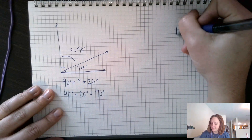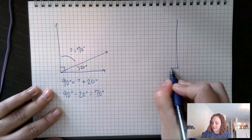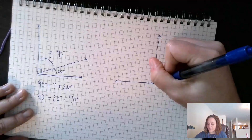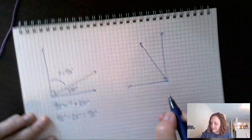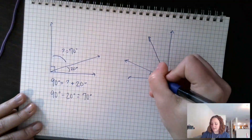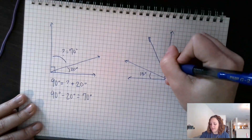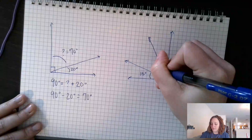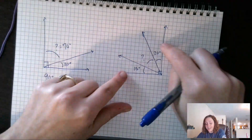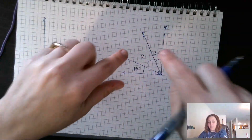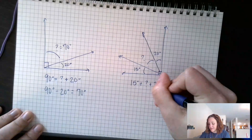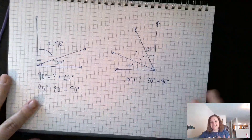Let's look at another example with a right angle, facing the other way but still a right angle. What if I split it up into more pieces? Let's say this piece is 15 degrees and this piece is 20 degrees, and I want to know the third piece. The whole thing is still 90 degrees.